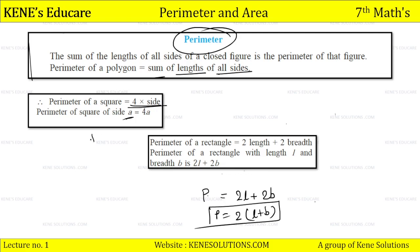Students, these two formulas you should remember. You can use them in scholarship and MTS exams. So that's why: perimeter of square is 4 × side, and perimeter of rectangle is 2(L + B).